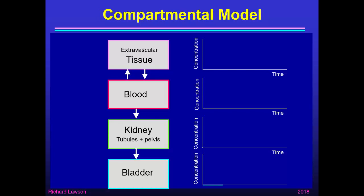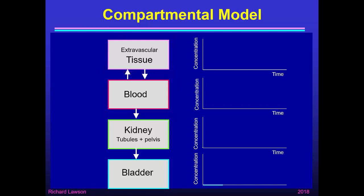Another model is the compartmental model, representing the kidney with four compartments: the blood into which we inject the activity; extravascular tissue — everything outside the vascular system; the kidney meaning the renal tubules and pelvis (not the renal artery and vein, which are part of the blood compartment); and the bladder. Tracers can freely exchange between blood and extravascular tissues in both directions, while removal by the kidneys is a one-way process from blood into kidney, and eventually everything moves into the bladder.